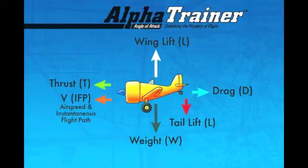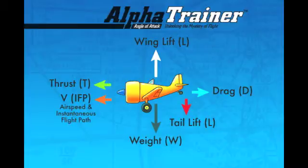If the forces are balanced in a three-dimensional sense, the aircraft cruises at a constant velocity. If the forces are unbalanced, the aircraft accelerates in the direction of the net force. Tail lift, mostly produced inverted, is used to control the position of the nose of the airplane and the angle of attack of the wing. The V, or velocity vector, is not a force vector, but a vector of speed and direction. The V vector identifies the instantaneous flight path. Lift is always perpendicular to the instantaneous flight path, while drag is parallel to the vector. This is important to understand because lift and drag do not always follow the attitude of the airplane.